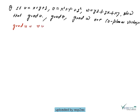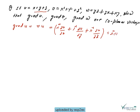Grade u means del u = i(∂u/∂x) + j(∂u/∂y) + k(∂u/∂z). Since u = x+y+z, all partial derivatives equal 1. So del u = i + j + k. Once we take the gradient, u is converted from scalar to vector quantity.